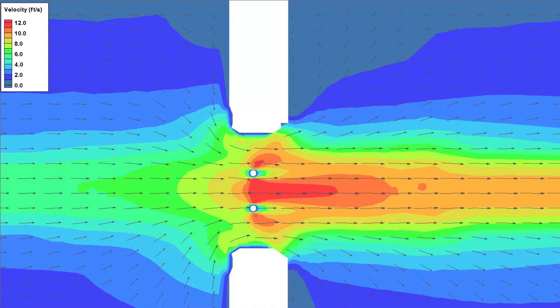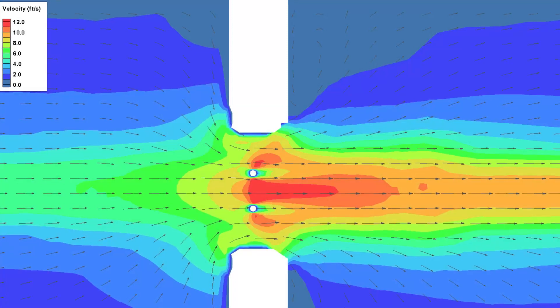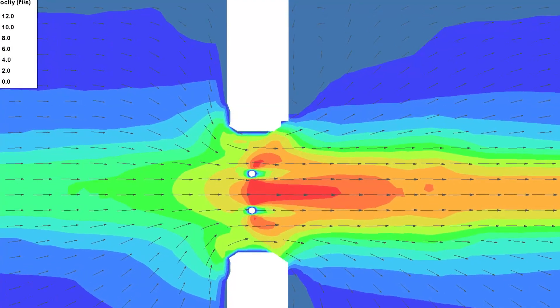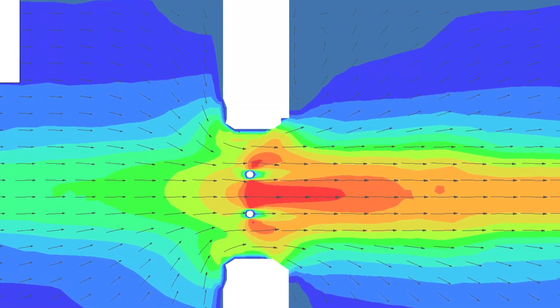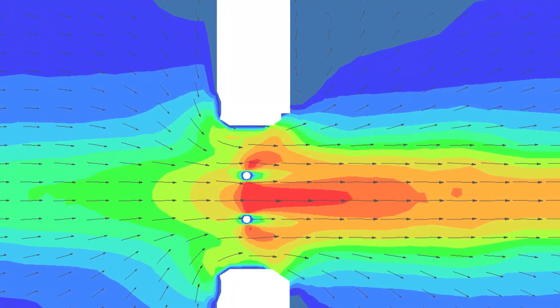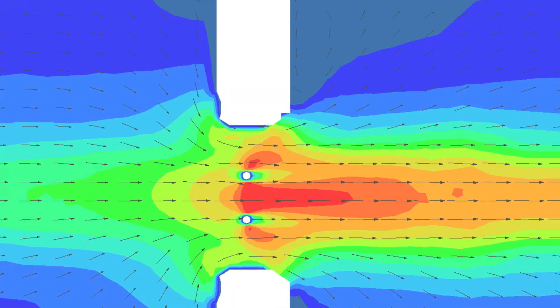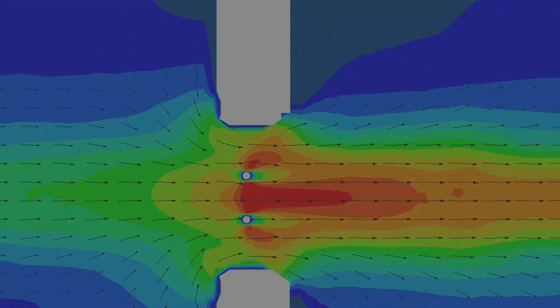Using holes in the mesh is the preferred approach when a detailed representation of velocities and flow direction through a bridge opening is needed. If not, the use of obstructions can represent the average head loss associated with the bridge piers and can result in a similar water surface elevation upstream of the bridge.